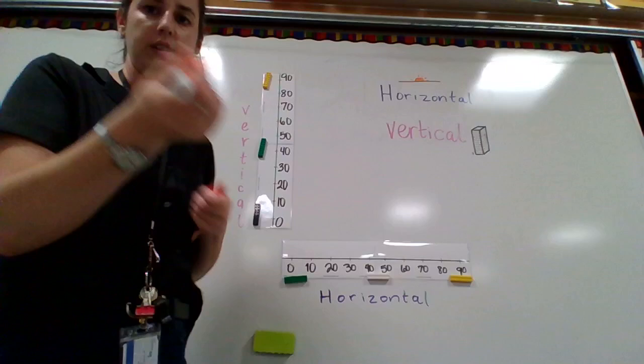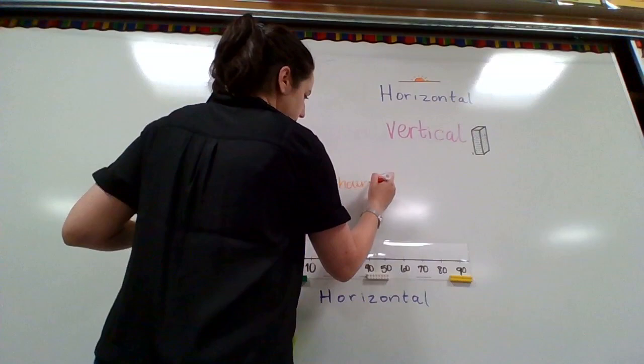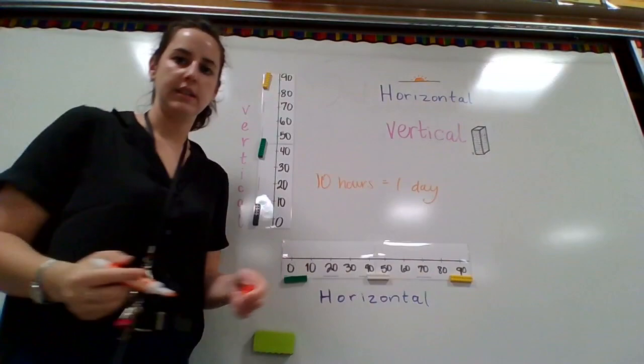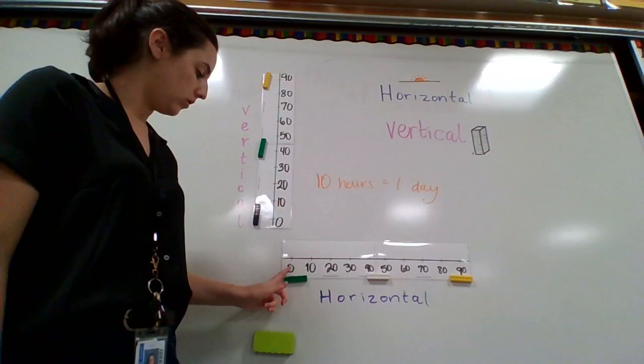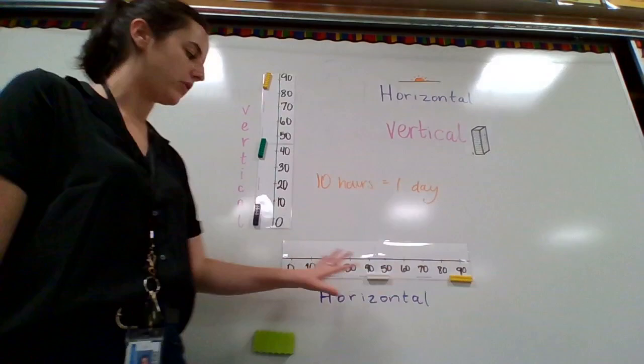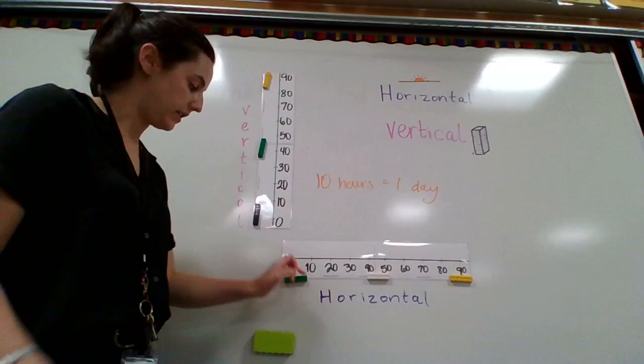Let me write that down. We're going to choose orange. 10 hours equals one day. Perfect. You can see it. So every 10 hours is equal to one day. So we're going to practice. You're going to do this with me. So get yourself ready. We're going to count from zero to 90. First, we're just going to go zero to 90 counting by 10s. Ready? Start at zero. Count with me.